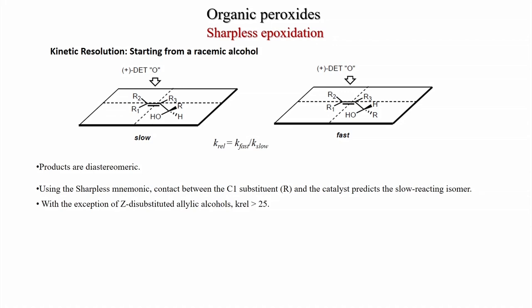With the exception of Z-disubstituted allylic alcohols, K_rel is generally greater than 25. When K_rel is 25 or higher, the ee of the unreacted alcohol is essentially 100% at 60% conversion. This means that kinetic resolution is possible and high enantioselectivity for both the unreacted alcohol and the epoxide product can be obtained.